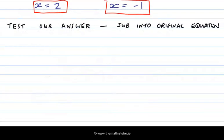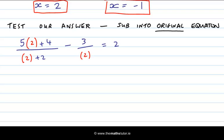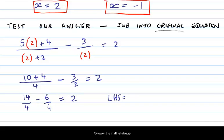Now we will test our answer by substituting into the original equation. So we substitute 2 into our original equation. Evaluating this, we get on the left hand side, 10 plus 4 on the top and 4 on the bottom minus 3 over 2 equal to 2. That gives me 14 over 4 minus 3 over 2. I need a common denominator here. So I'm going to write 6 over 4 instead of 3 over 2, and that's equal to 2. So my left hand side is equal to 14 over 4 minus 6 over 4, which is 8 over 4, which is 2. And that's equal to my right hand side. So I have satisfied my equation.